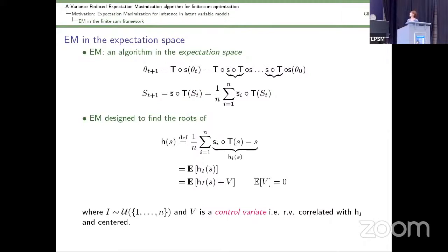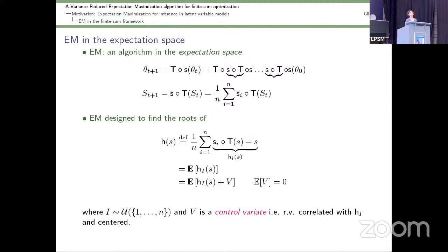This defines a function h of s which is the sum of many values. To avoid this sum, an idea is to see it as a mean — as an expectation of a random variable, an integer random variable uniform on the examples 1 to n. Possibly, to reduce the variance of stochastic approximation, you could also introduce another random variable V here, whose expectation is zero, but which is chosen correlated to the previous term h_i, in such a way that it reduces the variance of stochastic approximation methods.